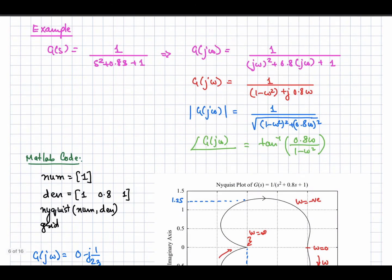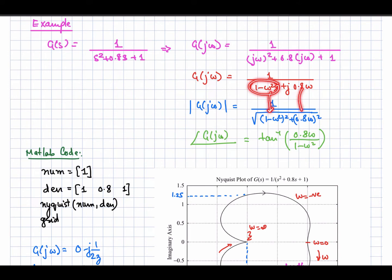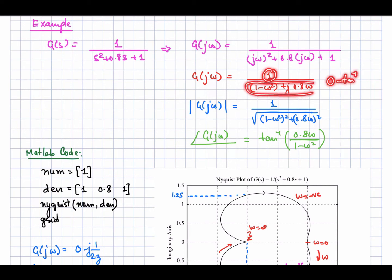Now let's look at an example. Suppose we have the given transfer function. Writing the sinusoidal transfer function by replacing s with j*omega, and simplifying into real and imaginary parts, the magnitude of the transfer function has numerator 1 and denominator from the real part (1 minus omega squared) and imaginary part (0.8*omega). The phase is minus arctan(0.8*omega divided by 1 minus omega squared).